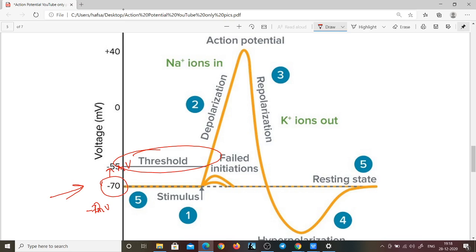That means your cell is on the road to becoming more and more positive, and it's going to go up to plus 40 millivolts. This is when you are running for action and you are trying to do something, and definitely your neuron is too.